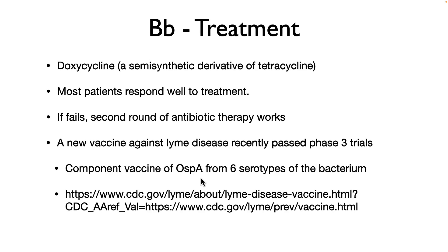Treatment is actually pretty straightforward. Doxycycline, a semi-synthetic derivative of tetracycline, is extremely effective, and most patients respond well to it. If it fails, a second round of antibiotic therapy normally works. Doxycycline is particularly useful because it can penetrate membranes, so no matter where B. burgdorferi is hiding in the body, the antibiotic can reach and kill it. A new vaccine against Lyme disease recently passed phase 3 trials — it is a component vaccine using OspA from six serotypes of the bacterium, and OspA is a protein on the outer surface of the bacterium.